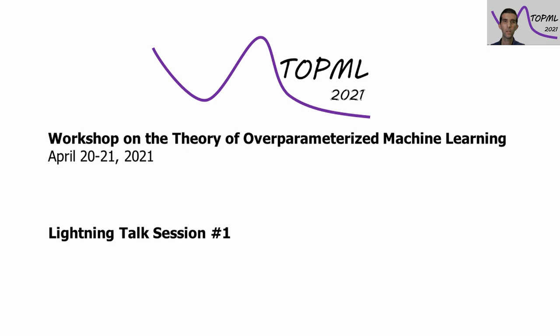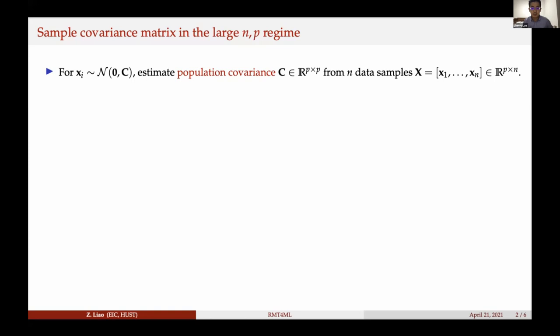The next speaker is Zhenyu Liao. My name is Zhenyu Liao and I'm happy to be here today to present some of our recent results on a data-dependent theory of over-parameterization, phase transition, double descent, and beyond. This is joint work with Homan Guyi at University of Grenoble Health and Michael Mahoney at UC Berkeley.